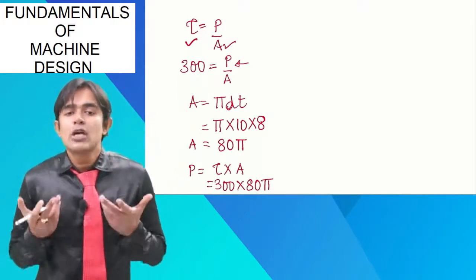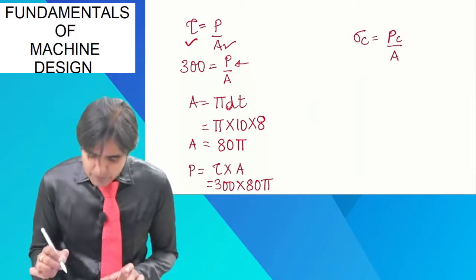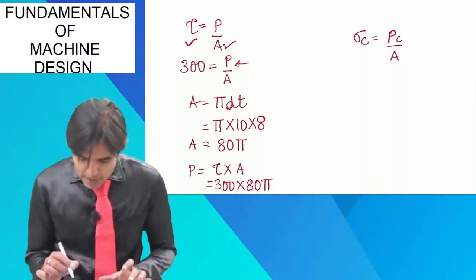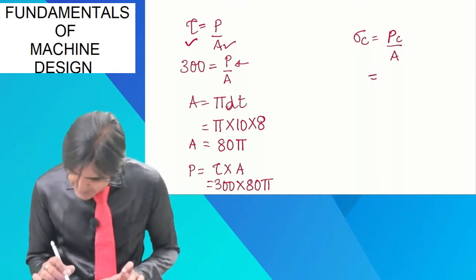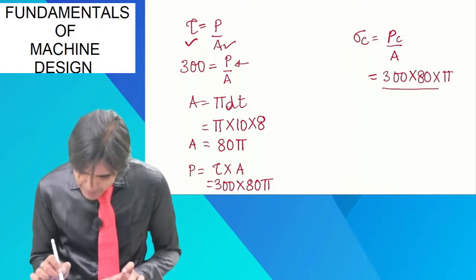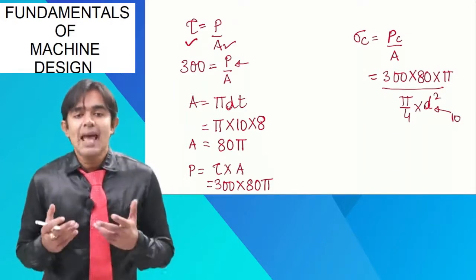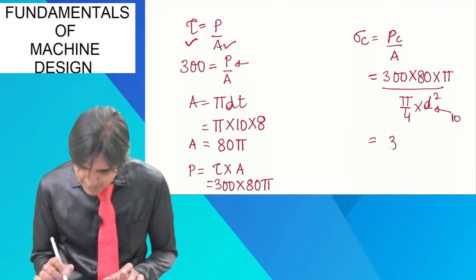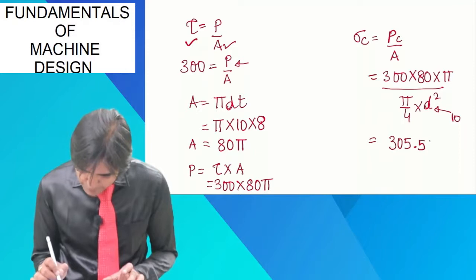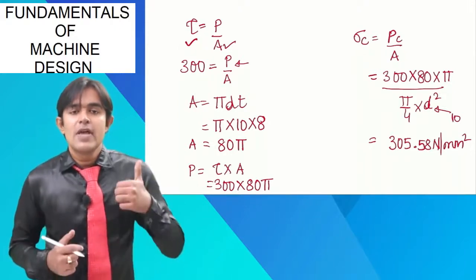Now, I need to find out the compressive stress, so compressive stress sigma C is equal to PC upon area. I already have found out the area, so now I can easily write down PC is equal to 300 into 80 into pi divided by pi by 4 into D square and D is 10. So, if I do the proper calculations, I will find out compressive stress as 305.58 newton per mm square. So, I basically found out the compressive stress. So, we have discussed tensile stress, we have discussed compressive stress.